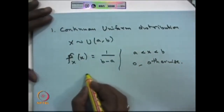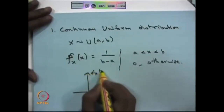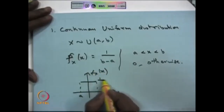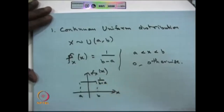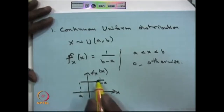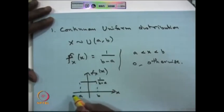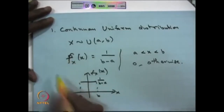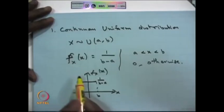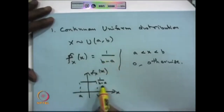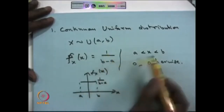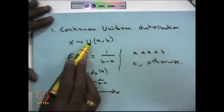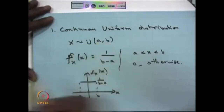The probability density function has height 1/(b-a) between a and b. The integral from a to b of 1/(b-a) equals 1, and it is always greater than or equal to 0. Therefore this is the probability density function of the continuous random variable. For any continuous uniform distribution, the PDF is 1 divided by the length of the interval, and 0 elsewhere.